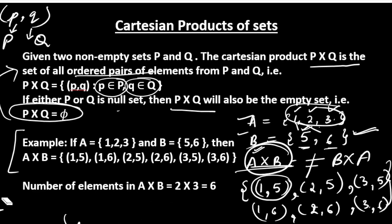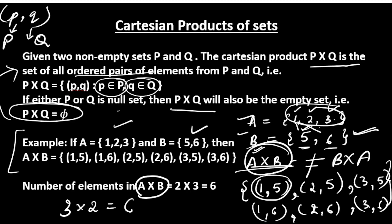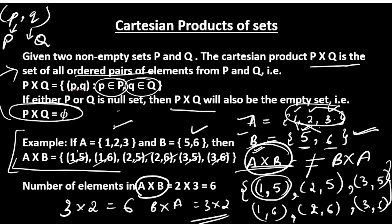The next important thing is how many elements will be in the Cartesian product of any two sets. The number of elements will be the number of elements of the first set multiplied by the number of elements of the second set. In this example, first set has 3 elements and second set has 2, so the Cartesian product has 6 elements — and you can see we have exactly 6 elements. This holds whether we do A cross B or B cross A.